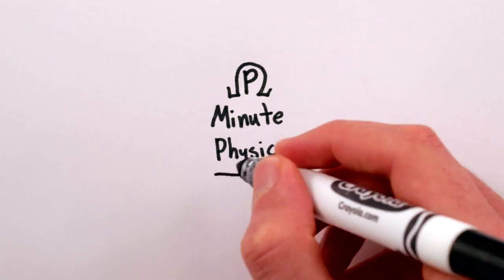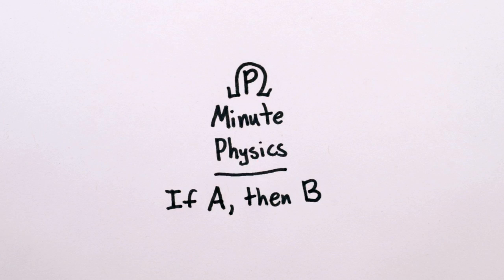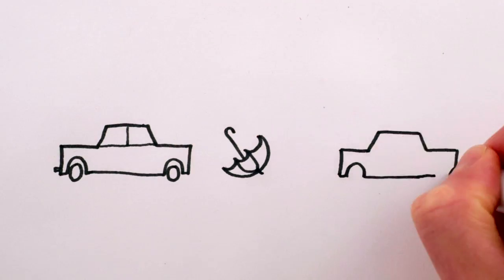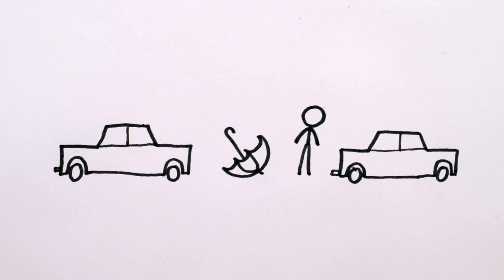In our everyday world, we're used to absolute, deterministic predictions. Throw a ball in the air, and it'll fall along an ellipse. Leave your umbrella parked on the street, and when you come back, it's still there. Just one umbrella.